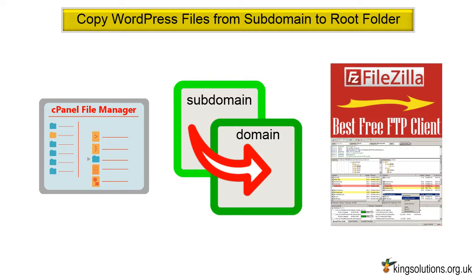Copy WordPress files from subdomain to root folder. Copy all the files in the subdomain folder to the root folder. This can be done using cPanel's file manager or an FTP client such as FileZilla. Leaving the original subdomain in place will enable your site to continue running, and also allows you to keep the WordPress site installed in the subdomain as a test zone. Be patient — depending upon the size of your website, this process could take quite some time.